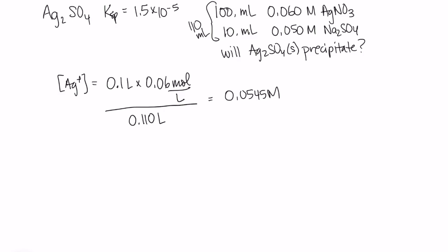For sulfate, I'm going to do a similar process. So I'm going to get 0.01 liters times 0.05 moles per liter, divide by our total volume of 110 milliliters, and I get 0.0455 molar.